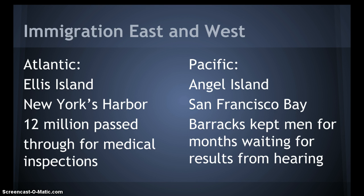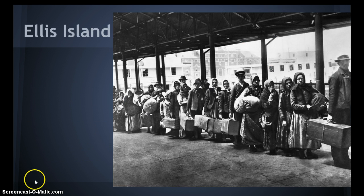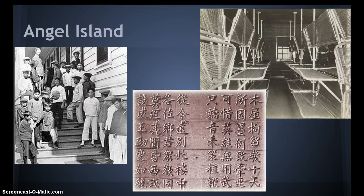On the Pacific side, mainly based out of San Francisco Bay, Angel Island is the name of the barracks. Sometimes they would keep the men there for months waiting for results from their hearings. Please look at these masses coming into Ellis Island. The three main groups here are the Italians and East Europeans, and definitely look into the Chinese — check out the barracks where they'd be waiting. They were there so long that this is what they carved into the walls on Angel Island.